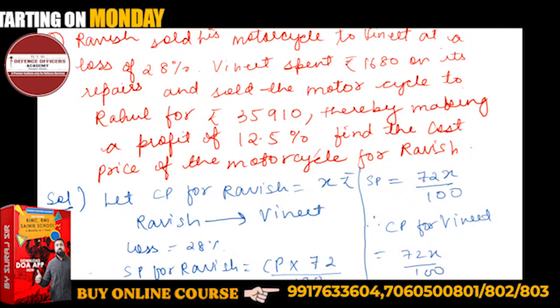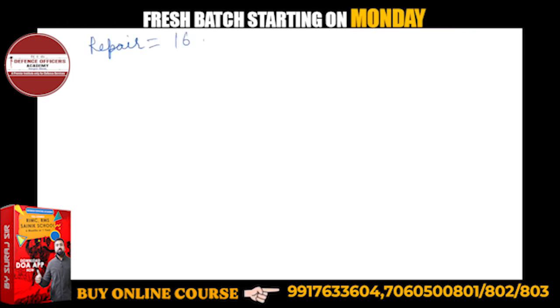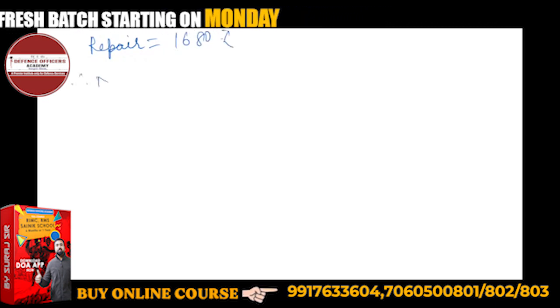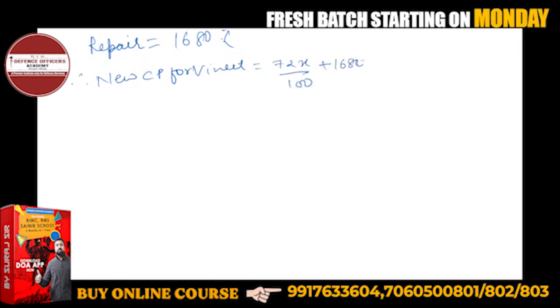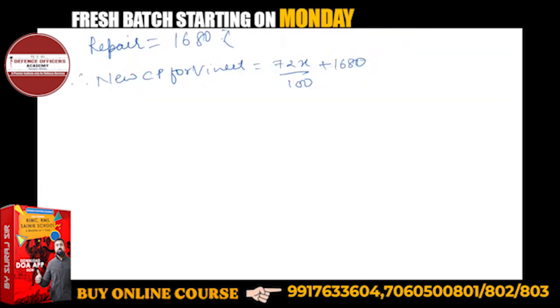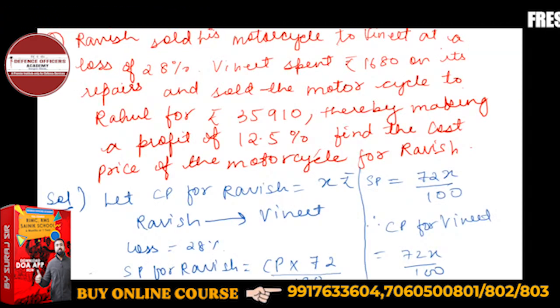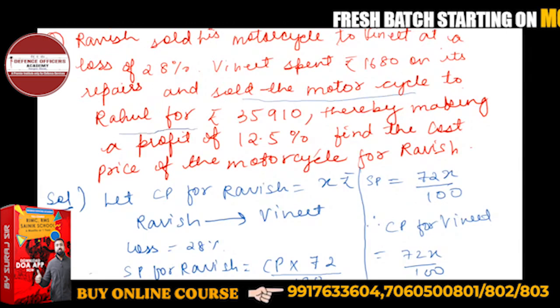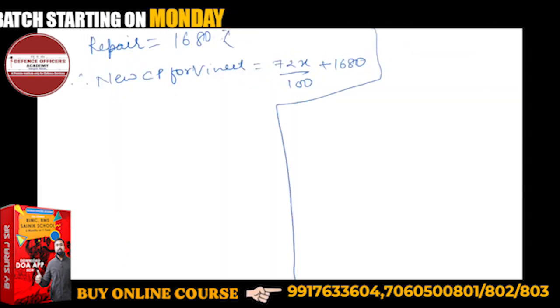Now what Vineet did, he spent 1680 on its repair also. So Vineet has spent, he added to his CP. Therefore, new CP for Vineet will be 72X upon 100 plus 1680 rupees. You are getting this. Now what are you saying? He sold the motorcycle to Rahul for rupees 35,910 thereby making a profit.